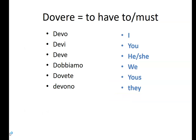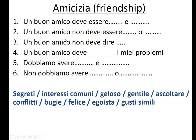Coming back to that verb that we looked at earlier on - dovere, meaning to have to or must. So: devo, devi, deve, dobbiamo, dovete, devono - it's an irregular verb. You'll notice that it starts as dovere but the I form becomes D-E, devo, then goes back to D-O for the noi and voi forms. It's pretty irregular, so it's one you would just have to learn. To start with, you just need to be confident that you can say I have to - devo.